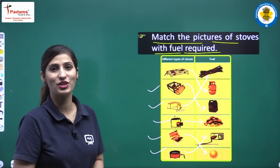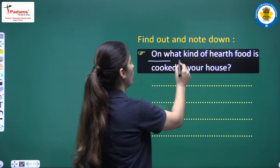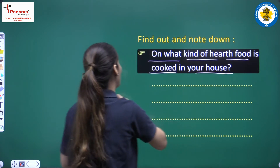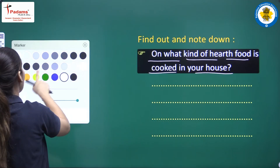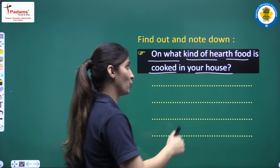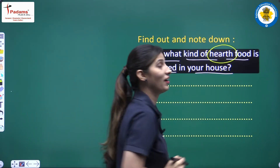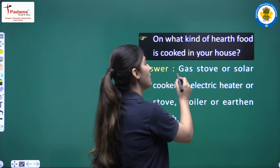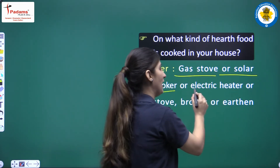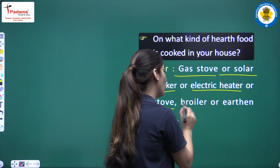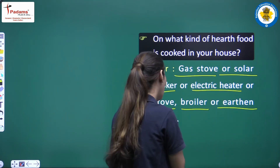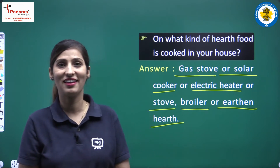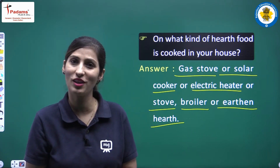Our next question is: on what kind of hearth is food cooked in your house? What type of stove or chula is used in your home? The answers could be gas stove, solar cooker, electric heater, stove, broiler, or earthen stove. You can write whichever one is used in your house.